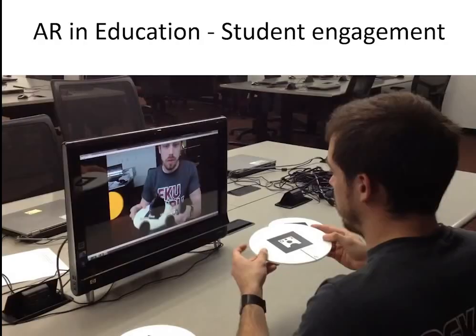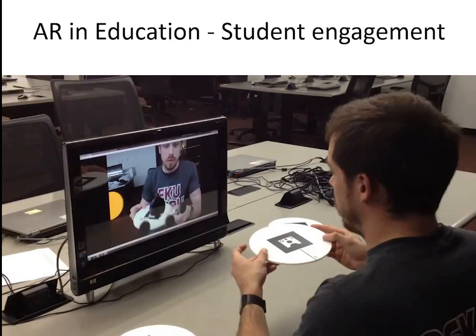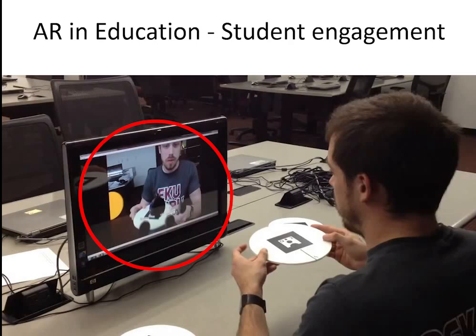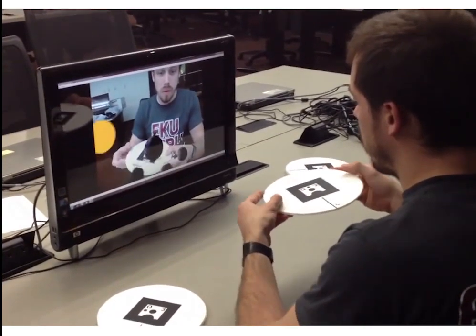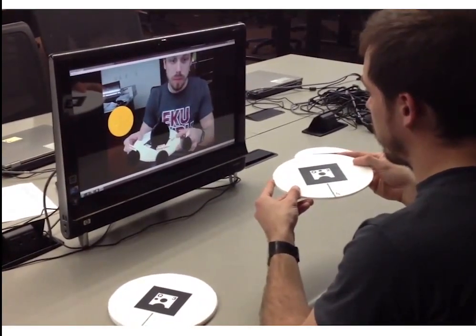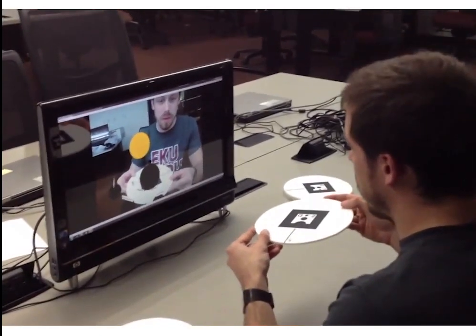Here's an example of student engagement with augmented reality models. This was part of my doctoral dissertation. I did lunar phases and the student was just interacting with the markers and the 3D models. Here you see a student holding a fiduciary marker, and the camera is mounted on top of the monitor. The student sees the augmentation happen on the monitor itself. The student is looking at the screen, not at the marker itself, which is not ideal for an augmented reality system, but it's pretty close.